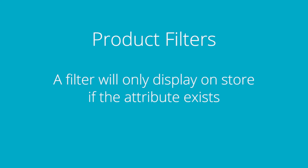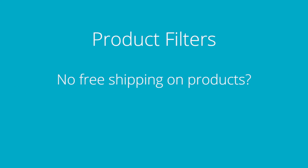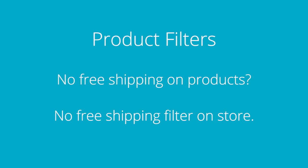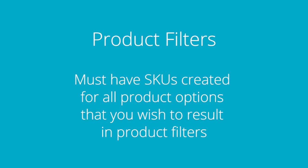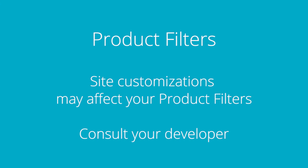Filters will only display on your storefront if you have products with those attributes. For instance, if you don't offer free shipping at all on the product level, you will not see this filter on your storefront. Also, you'll need to make sure you've created SKUs for all of your product options. Check out our tracking inventory video for more on generating SKUs. Setting up product filtering is very simple; however, if you have any customizations, you'll want to speak with your designer or developer.